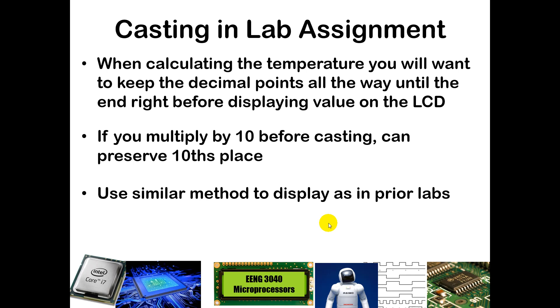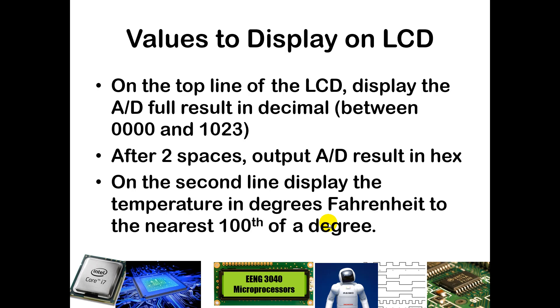We will use similar methods to how we have printed previous results in earlier labs. On the top line of the LCD, I want you to display the full result of the analog to digital conversion, just like you've done in the accelerometer lab and in the A to D lab. This will be between 0 and 1023. Then I also want you to display the result in hexadecimal. We will do a similar conversion process, but in this case, we will do divide by 16. We will have a little bit of an if statement to offset some things. I'll talk about that when you get into lab.